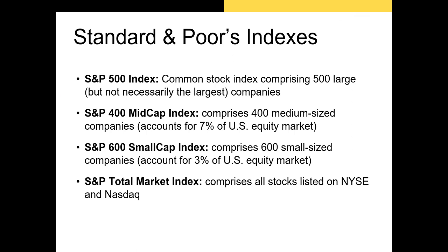Standard & Poor's also puts out three other prominent indexes. There's the S&P 500, the S&P 400 mid cap index which tracks the performance of 400 mid cap stocks, and the S&P 600 small cap index which tracks 600 small cap stocks in the US. The cutoff for small cap stocks is about $2 billion, and mid cap stocks are generally defined as stocks with a market capitalization between $2 billion and about $10 billion. Anything larger is considered a large cap stock. The S&P total market index comprises all 1,500 of these stocks and tracks about 97% of the total market cap of publicly traded stocks in the US.